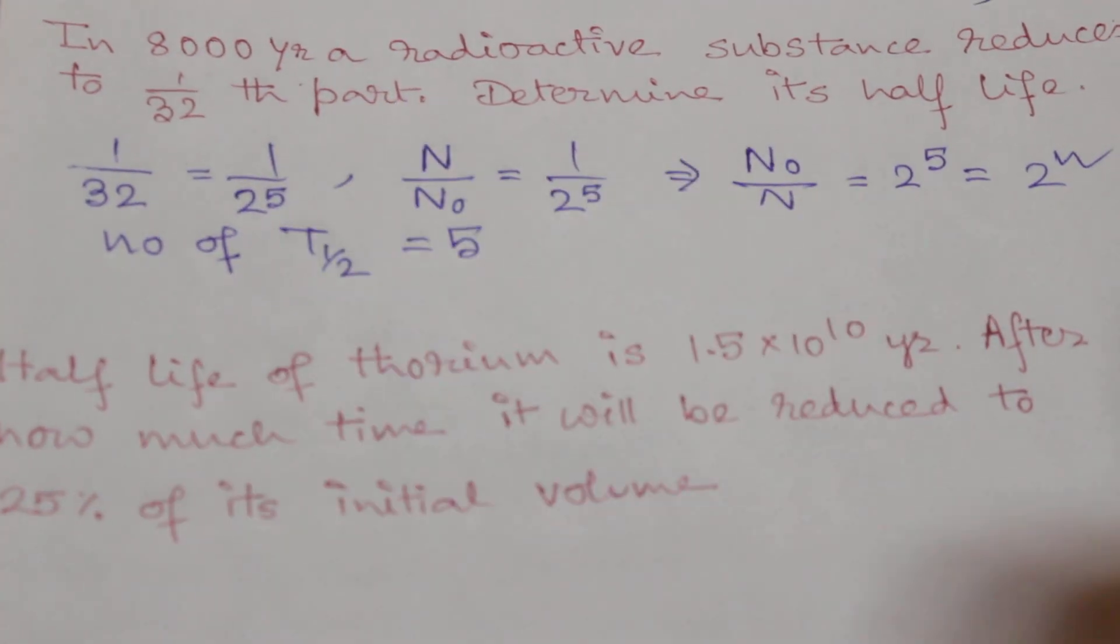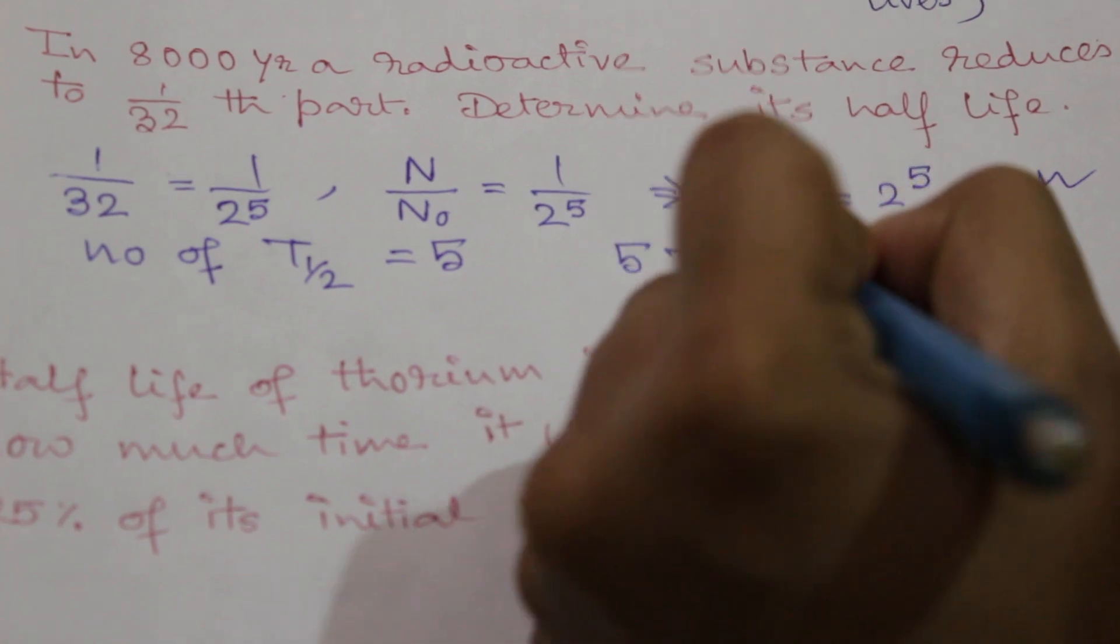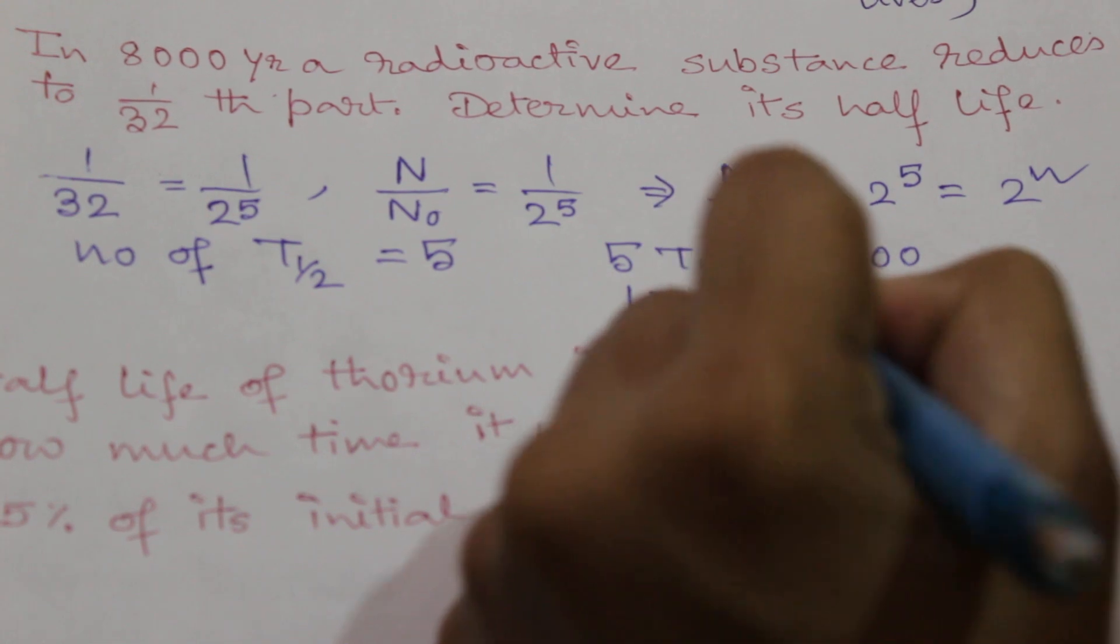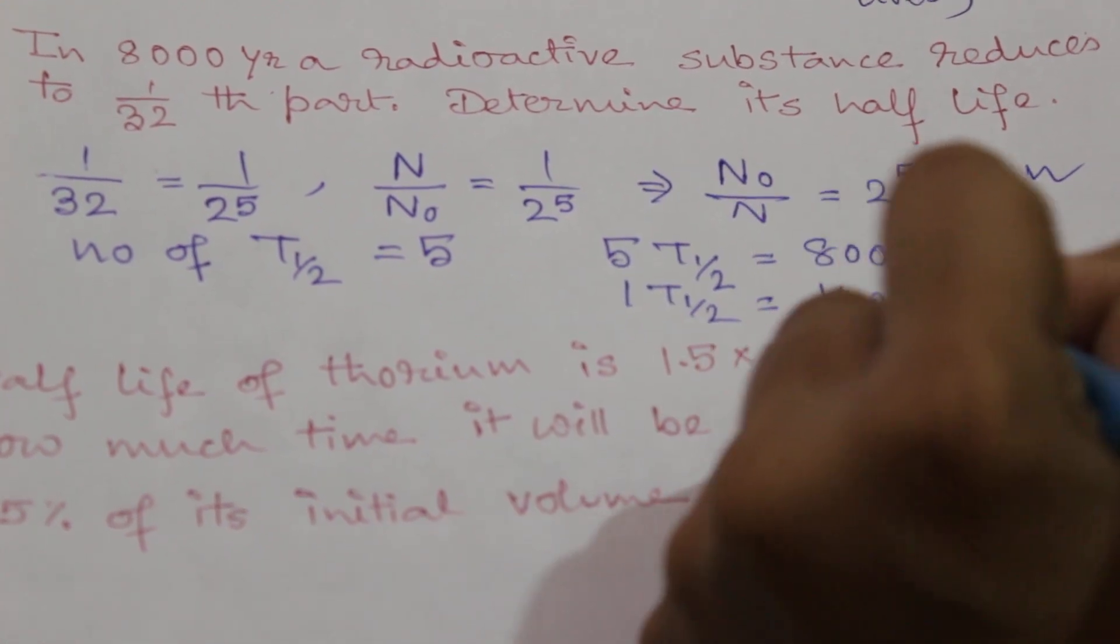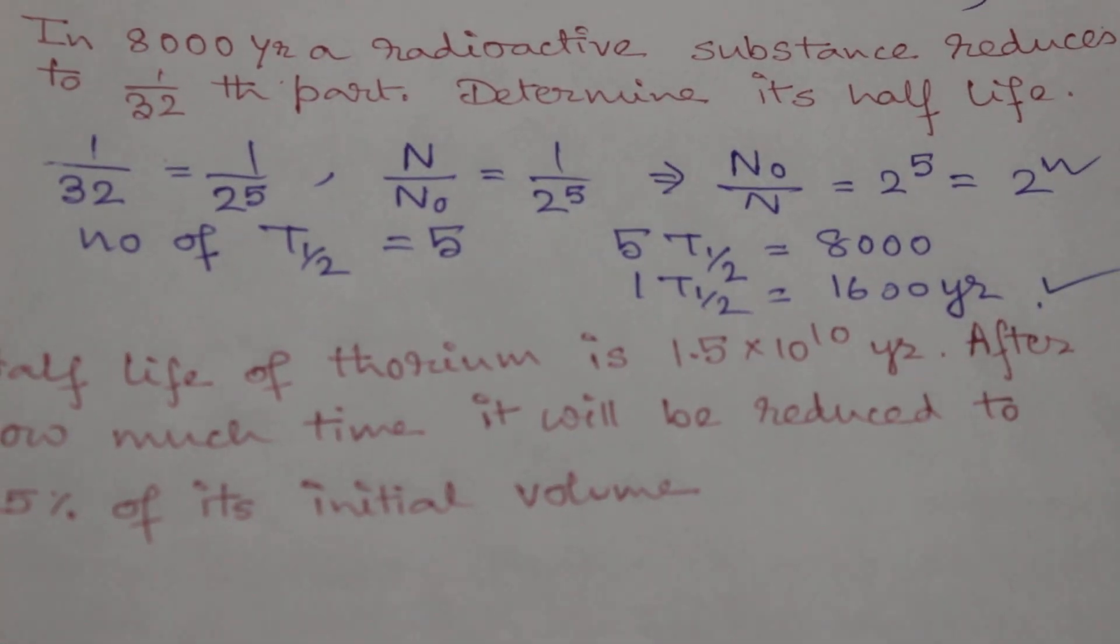So 5 half-lives equal 8000 years. One half-life is equal to 1600 years. This is how we can solve this type of problem.